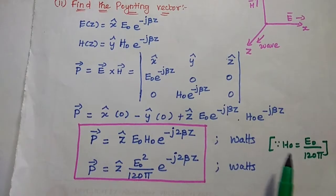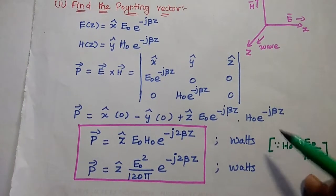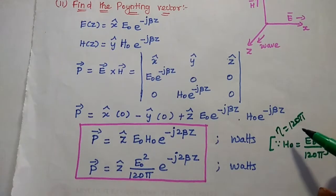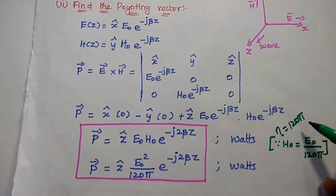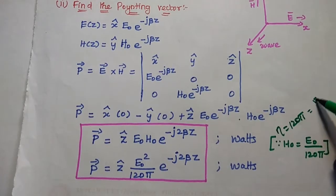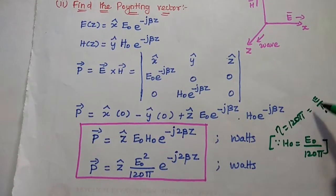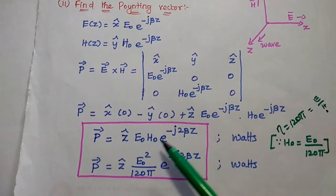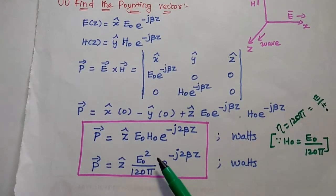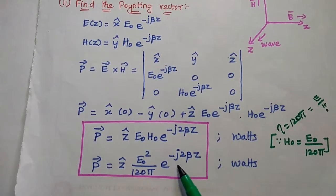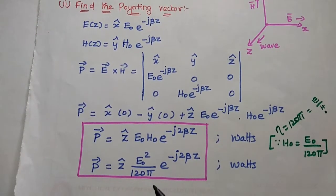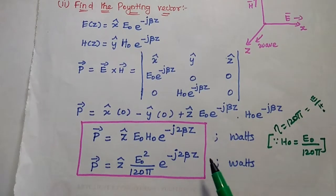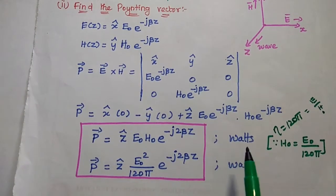Using the relation between E and H: since it is a lossless medium, the characteristic impedance η = 125 Ω, which equals E/H. From this, H = E/125. Substituting H₀ = E₀/125 into the expression, the Poynting vector becomes ẑ · E₀²/125 · e^(−j2βz). Since it represents power flow, the unit is watts.